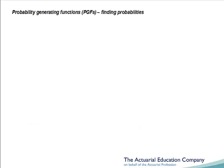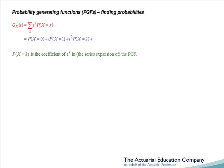Finally, let's look at how we can use probability generating functions to generate probabilities. The definition of a PGF is the sum of t to the x times the probability function. Expanding this summation, we have the probability x equals 0, plus t times the probability x equals 1, plus t squared times the probability x equals 2, and so on. We can see that the probability that x equals k is the coefficient of the t to the k term in the series expansion of the PGF, and so we can use this rule to determine probabilities given a distribution's PGF.